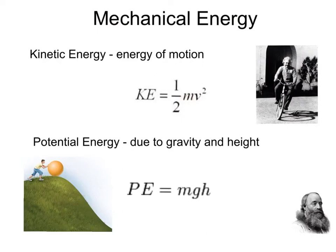The other type of mechanical energy is potential energy. This potential energy is due to gravity and height. Here we can see a ball on top of a mountain at a certain height. To calculate the potential energy of this ball, we'd need to know the mass, the acceleration due to gravity, and its height.